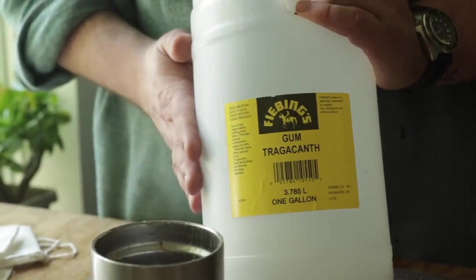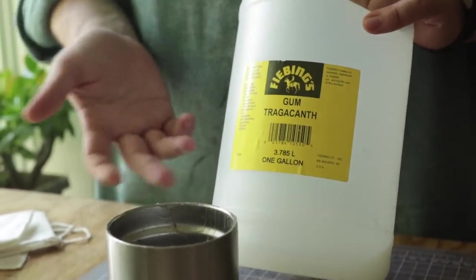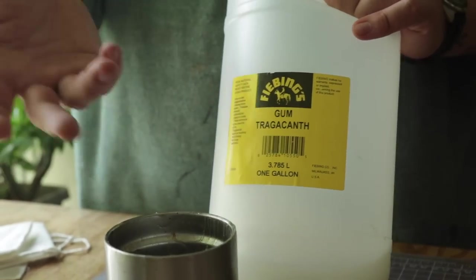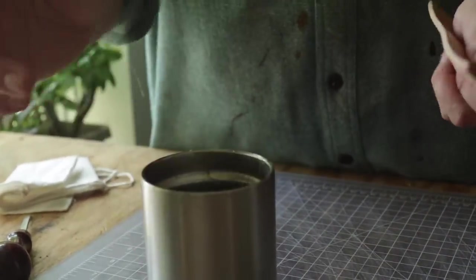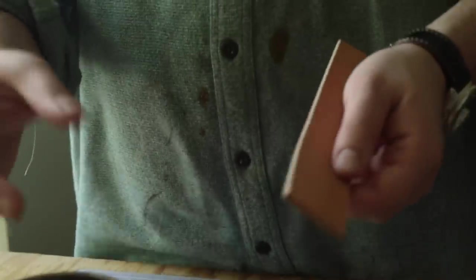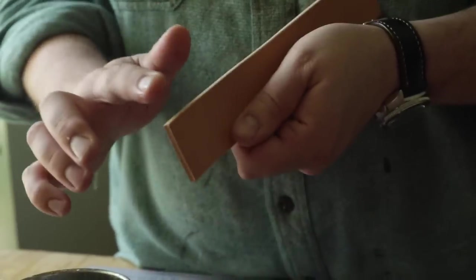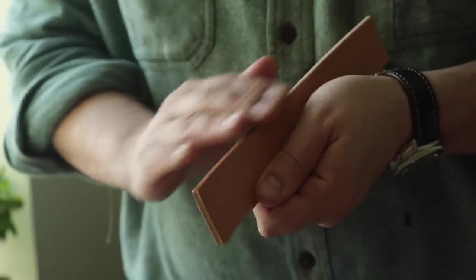So gum trag is a natural gum. It's made from the sap of, I believe, a legume plant. They use it in lozenges, they use it in food. It's edible, you could drink it. It's just a sap, a gum made out of a sap.